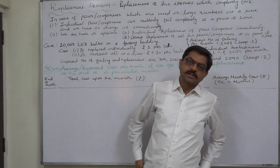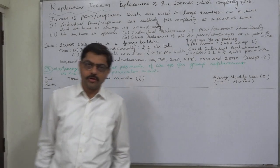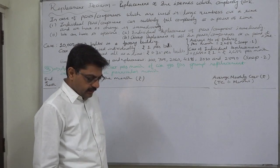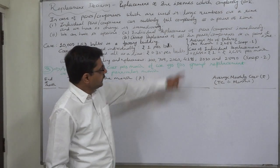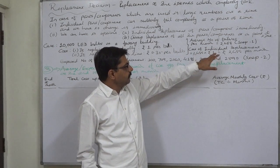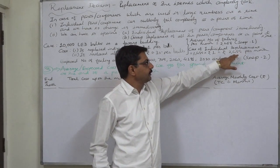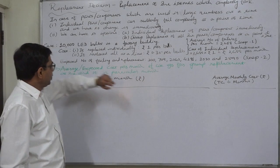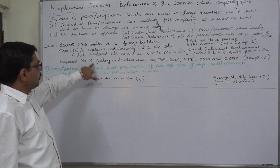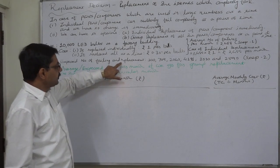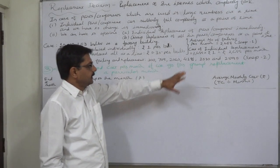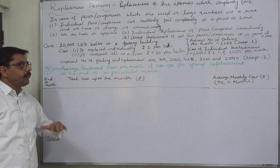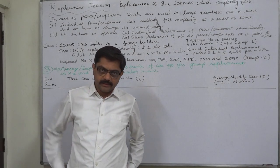Hello and welcome. This is the third part of the solution of the case of individual replacement and group replacement. In the first part, we calculated expected life, number of failures, and cost of individual replacement. In the second part, we calculated the expected number of bulbs failing and replaced. Now in the third part, if we go for group replacement at the end of a particular month, what happens to the total cost?